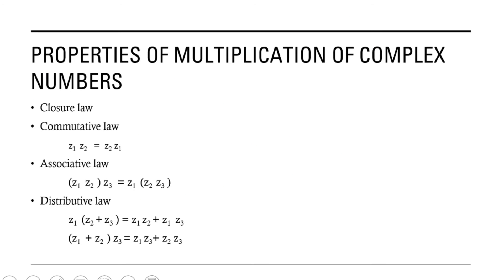Now we will see the properties of multiplication of complex numbers. The first is the closure law — the product of two complex numbers is also a complex number. The next is the commutative law: z1 into z2 equals z2 into z1. The third is the associative law: z1 z2 into z3 equals z1 into z2 z3. We also have the distributive law: z1 into z2 plus z3 equals z1 z2 plus z1 z3.